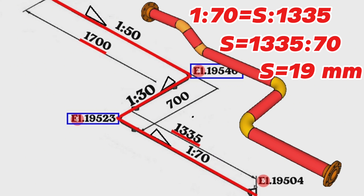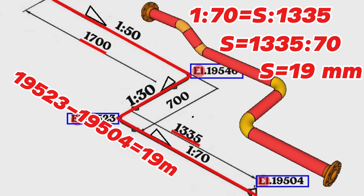Let's check this with a different method using elevation levels. From 19,523 millimeters, which is the height level of the turn to the south point, we subtract 19,504 millimeters, which is the height level of the last point of the pipeline. 19,523 minus 19,504 equals 19 millimeters. It means the slope of this part of the pipeline over 1,335 millimeters distance is 19 millimeters.